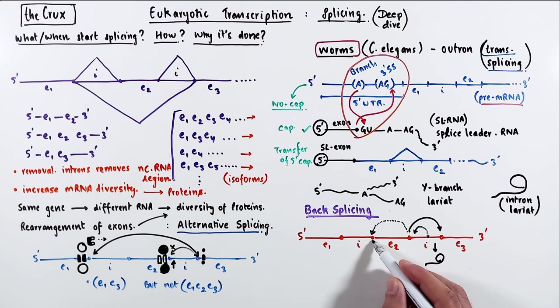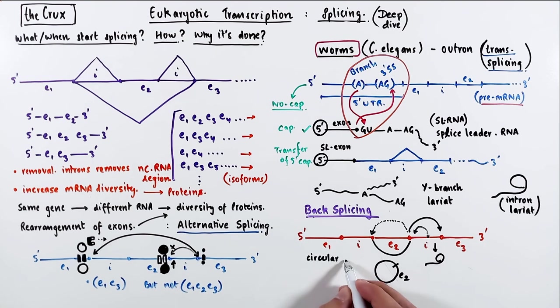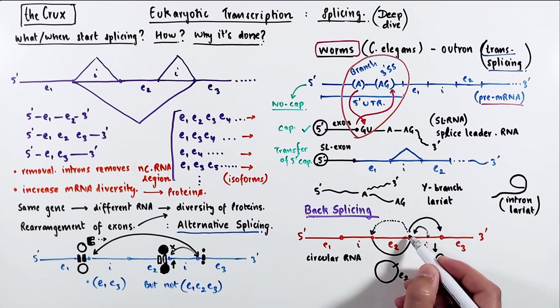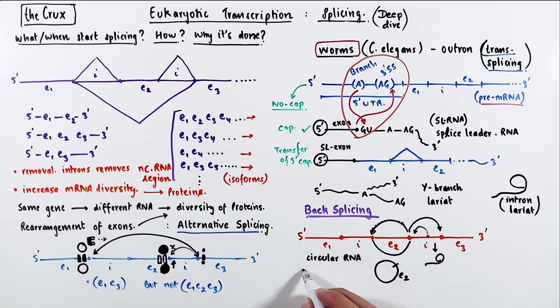meaning that the 3' splice site of the previous intron is attacked. So exon 2 will be removed as this circular RNA instead. And this kind of splicing is called a backward splicing. Back-splicing is typically seen in pathological condition.